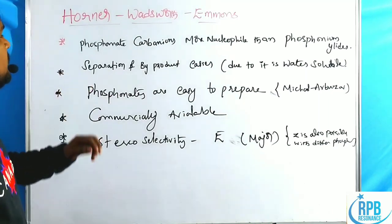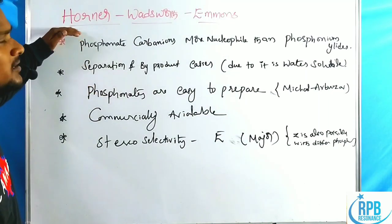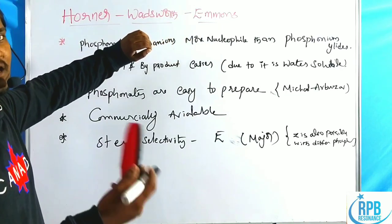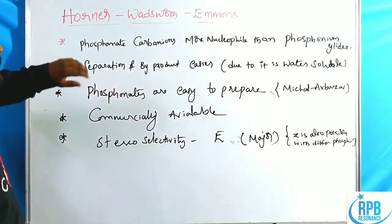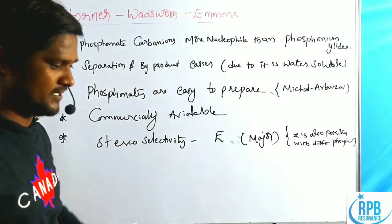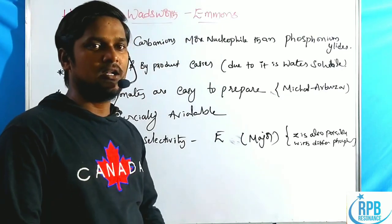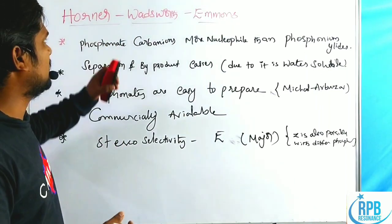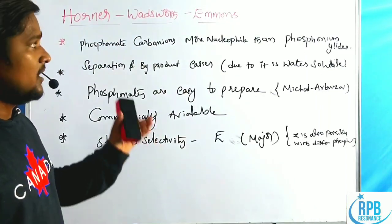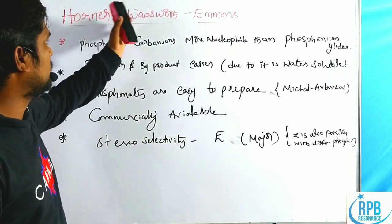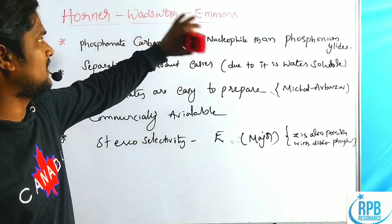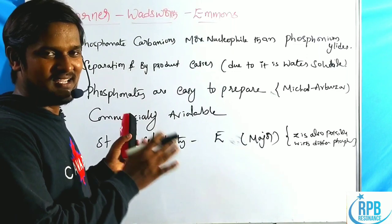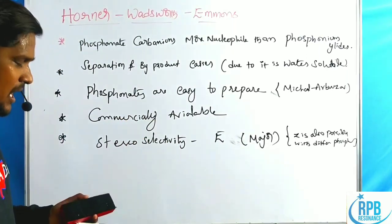Now we will go through another modification of the Wittig reaction. Three scientists modified the Wittig reaction with different criteria. This is the Horner-Wadsworth-Emmons reaction, also called the Wittig-Horner reaction, Wittig-Wadsworth reaction, or Horner-Wadsworth reaction — different names, but it's the same reaction.